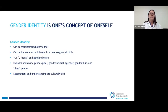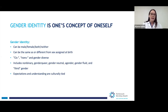Gender identity is how you see yourself. It can be either as male or female, or both, or neither. It also can be along a continuum or spectrum of those things. Your gender identity may be the same as the sex that you were assigned at birth, but also it may not be. That's where we start to hear the words cis and trans, which come from Latin. Cis means on the same side, and trans means on the other side or across. We use those terms as cisgender or transgender. Cisgender means someone whose gender identity aligns with the sex they were assigned at birth, and transgender is when someone's gender identity does not align with the sex they were assigned at birth.